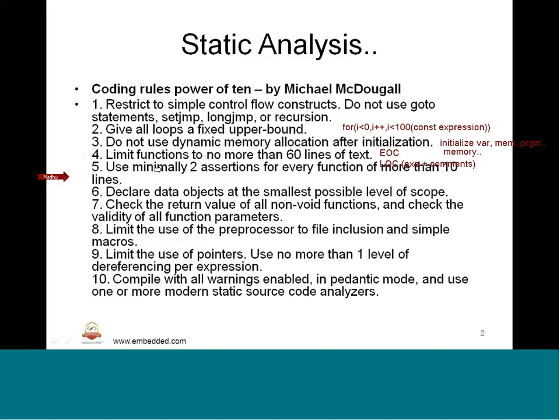The fifth golden rule: use minimally 2 assertions for every function of more than 10 lines. If a function has more than 10 lines, there must be a minimum of 2 assertive statements — every function should have at least 2 assert statements if it is more than 10 lines.